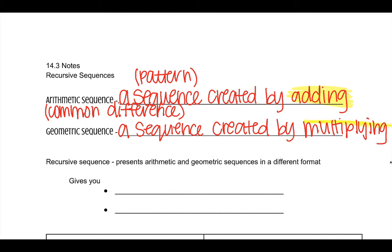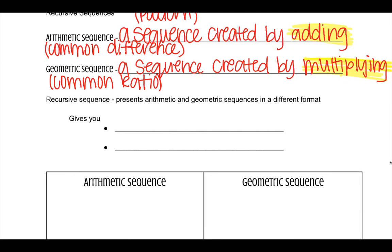That's the key to tell between arithmetic and geometric sequences. Geometric has a common ratio instead of the common difference. Recursive sequences just present arithmetic and geometric sequences in a different format — it's stuff we already learned, just in a different way.